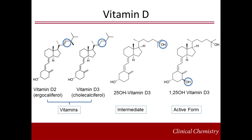They are enzymatically converted to an intermediate compound, 25-hydroxyvitamin D, which in turn serves as a pool for the biologically active form of the vitamin called 1,25-hydroxyvitamin D. The key differences between these forms are highlighted with the blue circles.